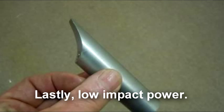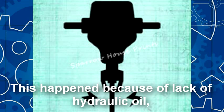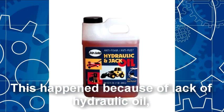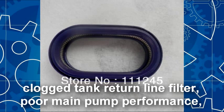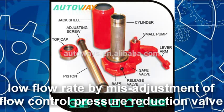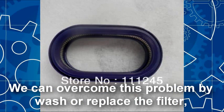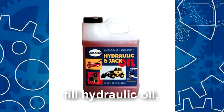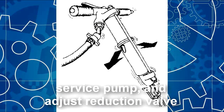And lastly, low impact. This happens because of lack of hydraulic oil, clogged tank return line filter, poor main pump performance, or low flow rate by misadjustment of flow control pressure reduction valve. We can overcome this problem by washing or replacing the filter, filling hydraulic oil, servicing the pump, and adjusting the reduction valve.